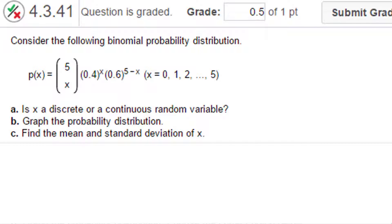Hi, this is Dr. Don, and I have a problem from the McClave text in my stat lab. This is problem 4.3.41, and it tells us consider the following binomial probability distribution, and it gives us this scary-looking formula, which maybe you will recall, p of x equals 5 choose x times 0.4 to the x times 0.6 to the 5 minus x for x equals 0, 1, 2, 3, 4, 5.